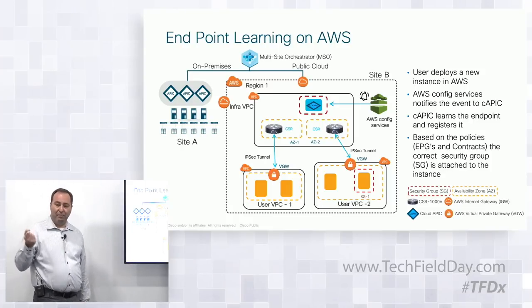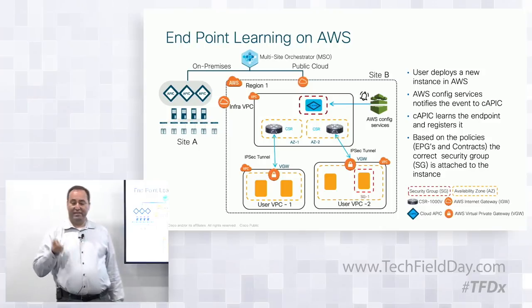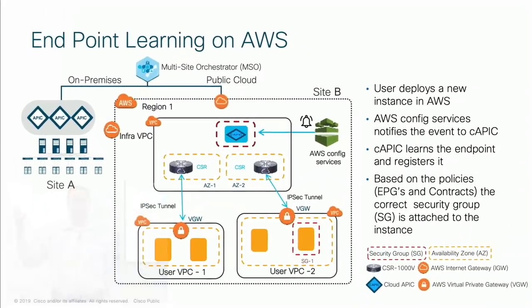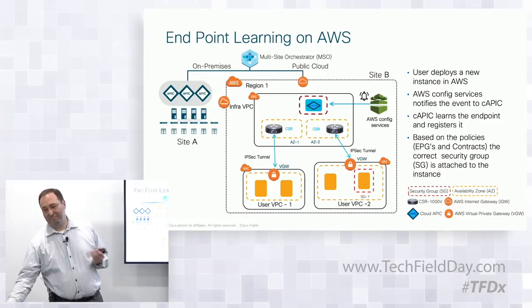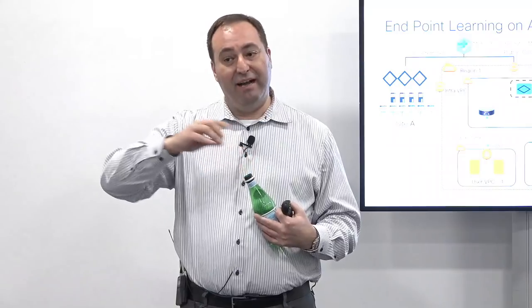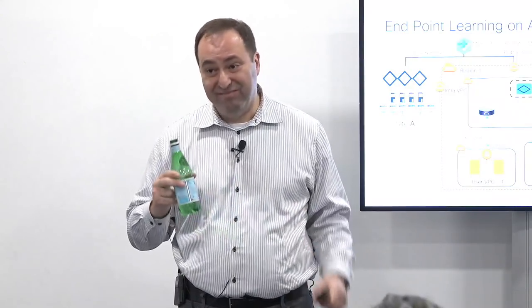When a dev brings up an instance on AWS, the AWS config services that we're subscribed to will tell cloud APIC that an instance came up in one of the VPCs of interest. The default behavior is: if we don't know what that instance is and you didn't give an appropriate tag or tell us where it's supposed to go, by default we're going to quarantine it — put it into a security group with no permissions, or some restricted permissions for your security team. You can't just bring up an instance and connect it back to your on-prem database without the right policy.